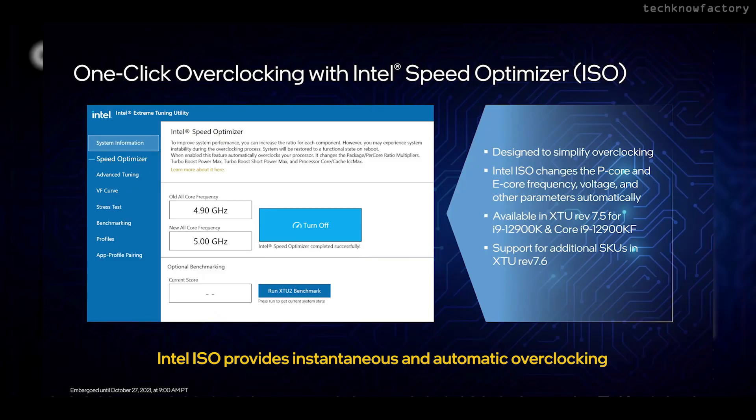Comparing the specs of 12th generation, some things are different because there are two different core types. Base frequency and turbo frequency now result in four total frequency values. The Performance core max turbo and Efficiency core max turbo are listed separately. Intel Turbo Boost Max Technology provides an automatically overclocked frequency boost.